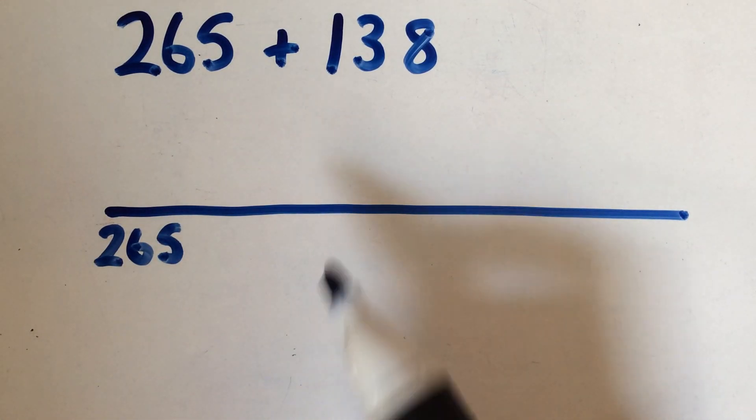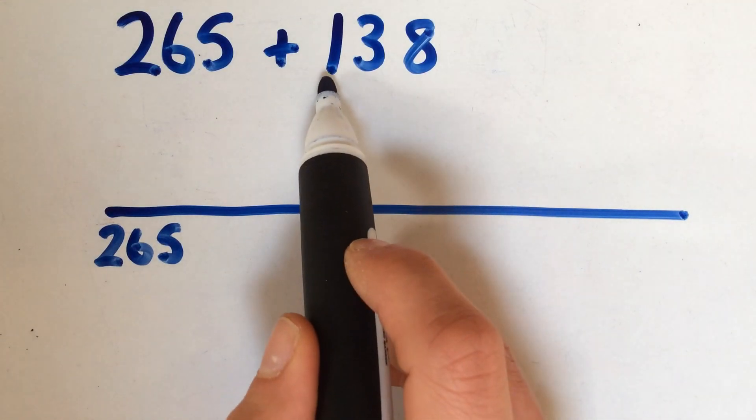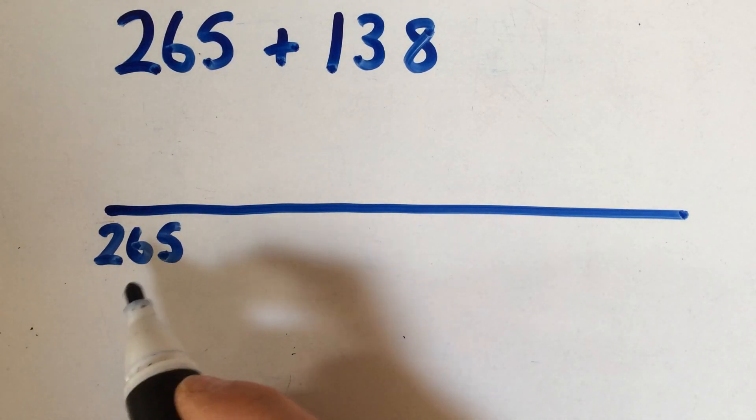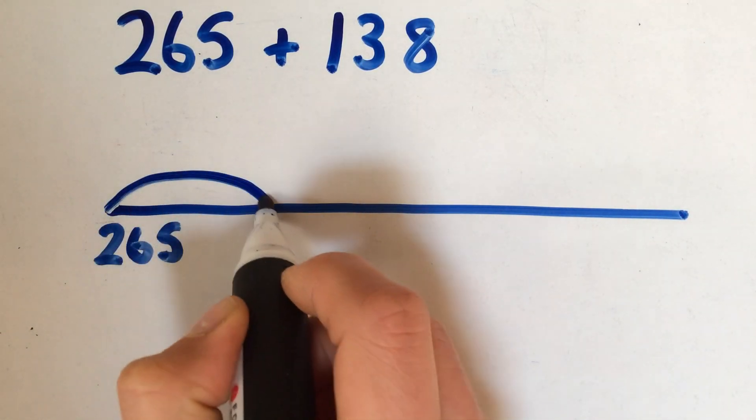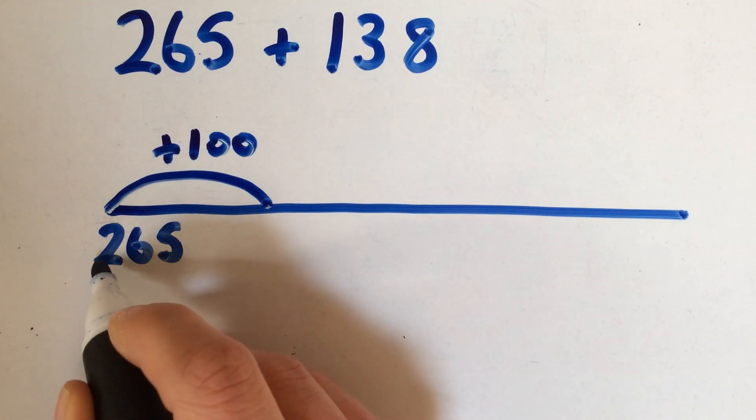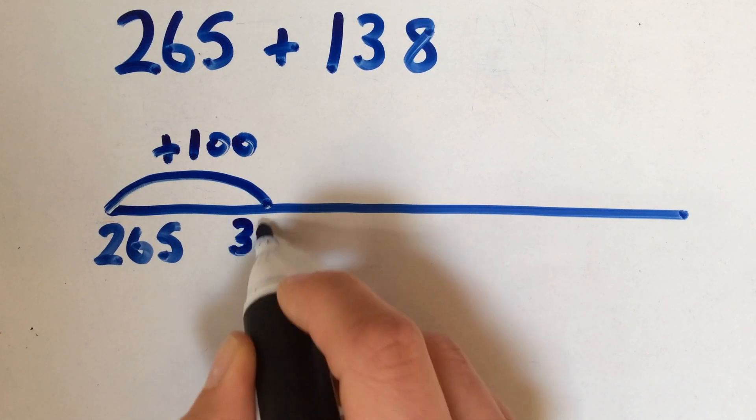Again, knowledge of place value is important because with 138, you're going to split that into smaller pieces. You might want to add the 100 to start with, which would take 265 up to 365.